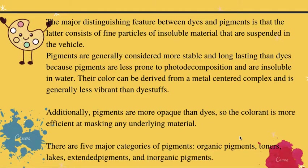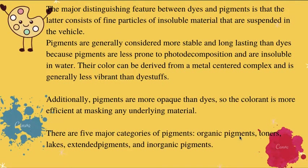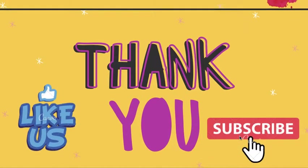These are the major differentiating features between dye and pigment. Pigments are more opaque than dyes — if the pigment is not opaque, it will mix with the paper surface and nothing will be visible. There are five major categories of pigments: organic pigments, toners, lakes, extended pigments, and inorganic pigments. That's it for today's video — if you liked it, please hit the subscribe button and like the video. Thank you.